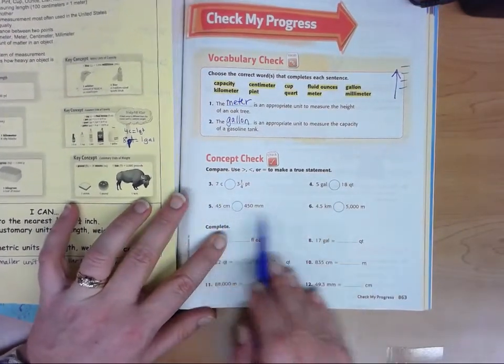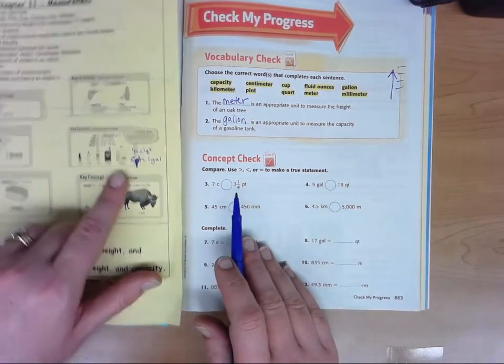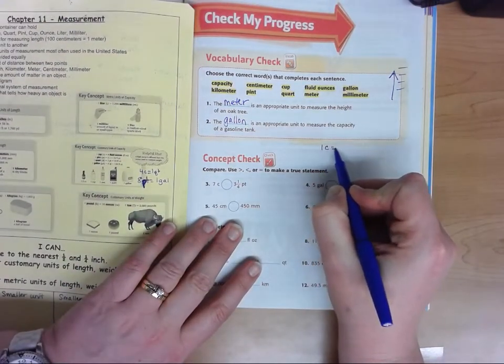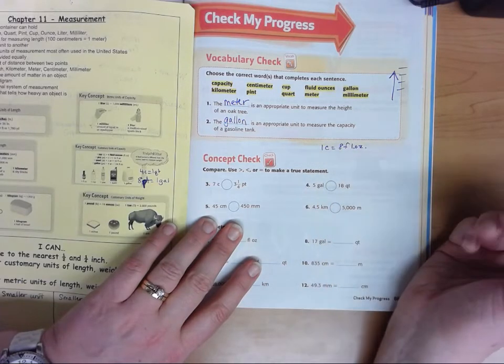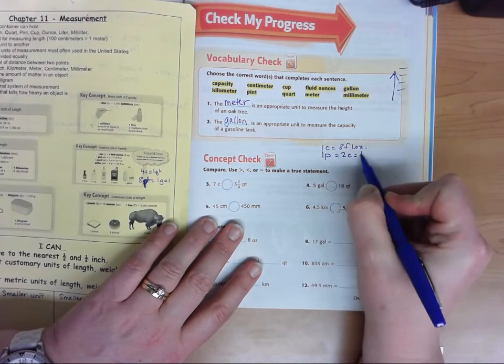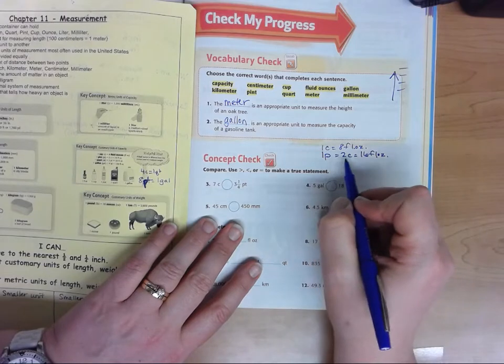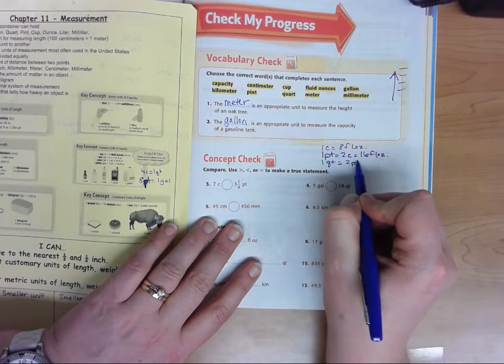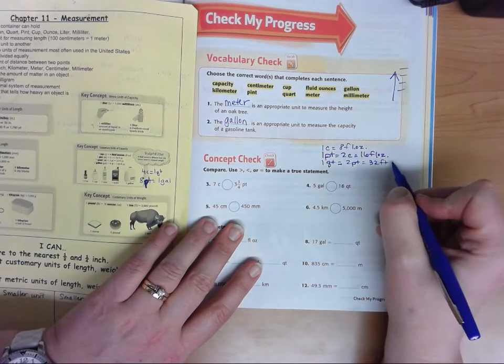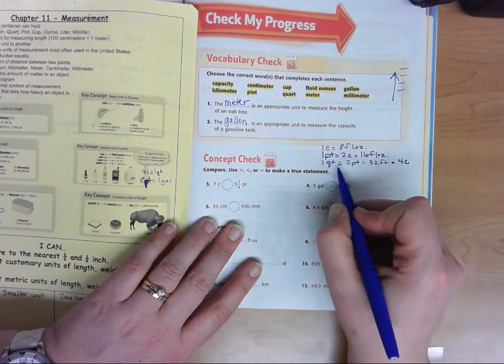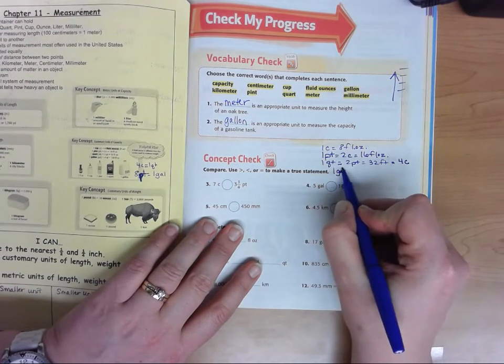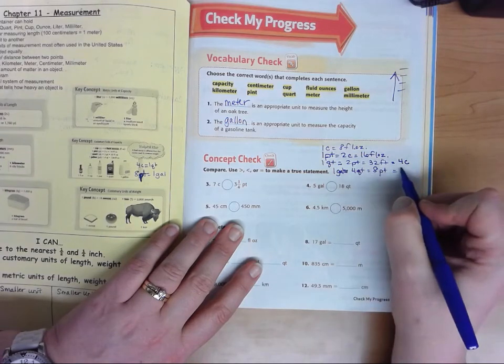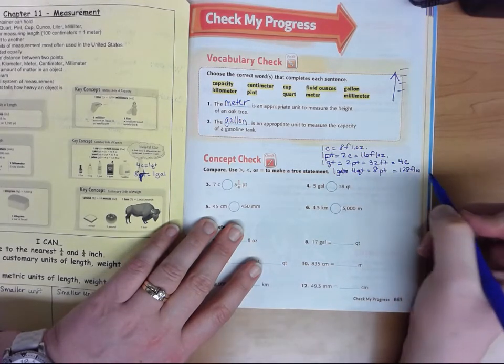Let's go back and review when we worked with capacities. You might want your yellow sheet out. You'll remember that one cup is eight fluid ounces. One pint is two cups, which is also 16 fluid ounces. One quart is two pints or 32 fluid ounces, and that is also equal to four cups. And then one gallon is equal to four quarts, which is equal to eight pints. And we also said it was 128 fluid ounces.